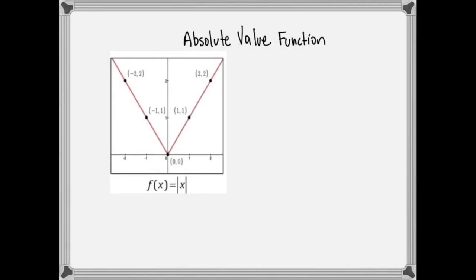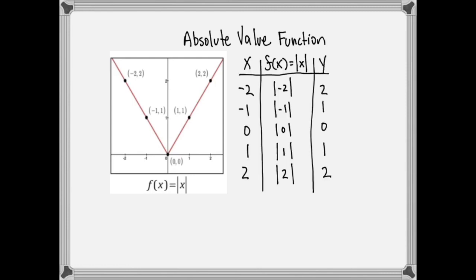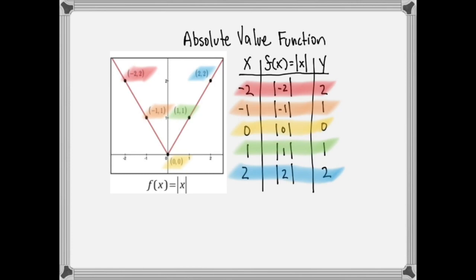The next parent function is the absolute value function. Just like the cubic function doesn't have a specific name, a lot of folks like to call it the V. It does come down to a point — this is not a polynomial function, so it has that pointed edge, which makes it a non-polynomial function. Plugging in negative two through two into this function and getting those outputs, when we plot them and connect them up with that sharp linear edge, that's our absolute value function.